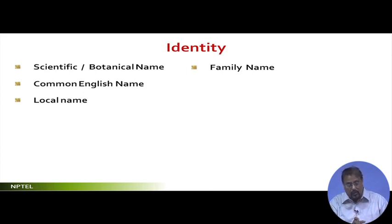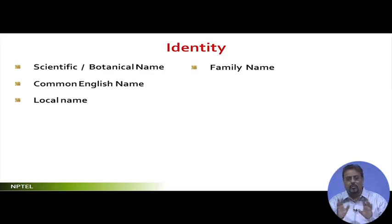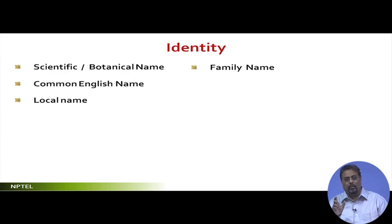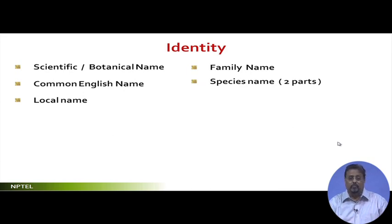This becomes complex when we see different names for different people in our country. For trees, a tree belongs to a family, and that family may have multiple genera. So the family name is one level, then the species name. Every species is going to be under a family.